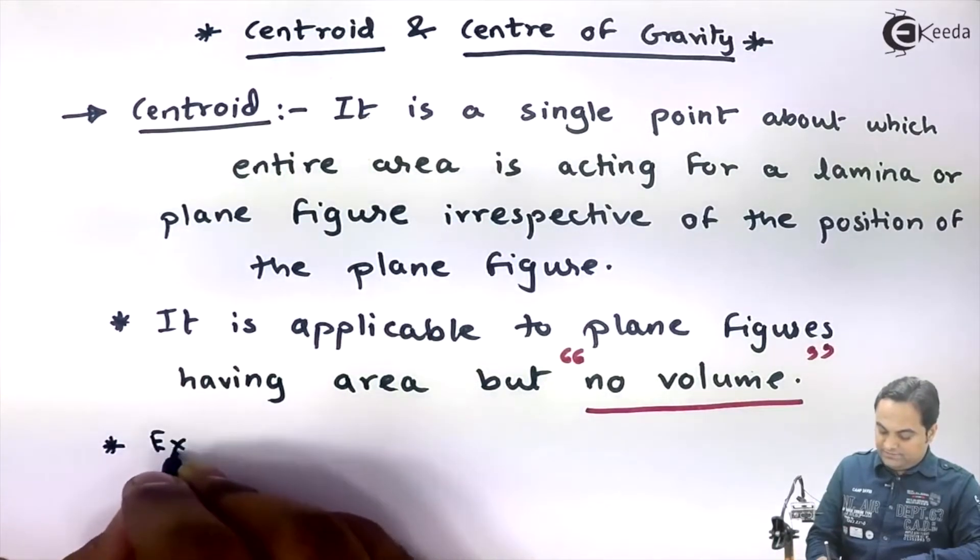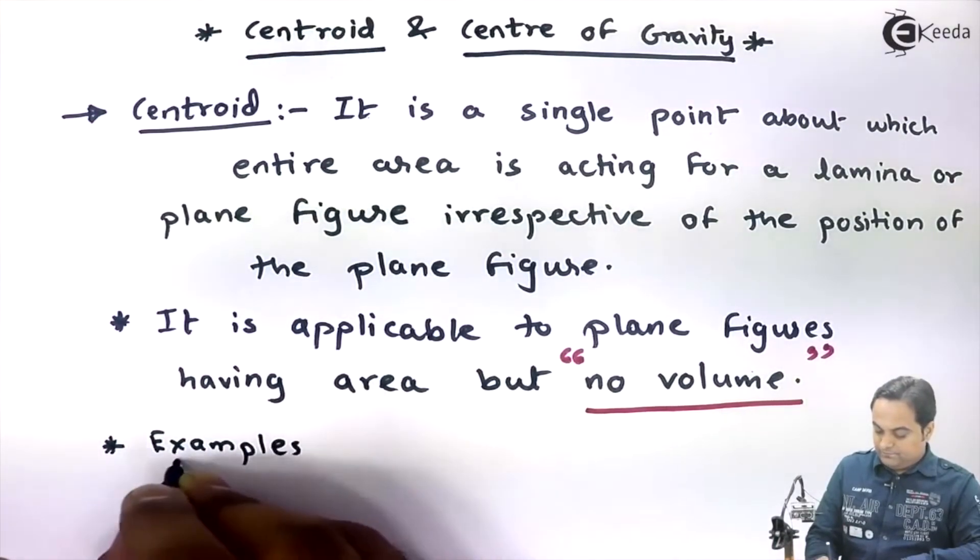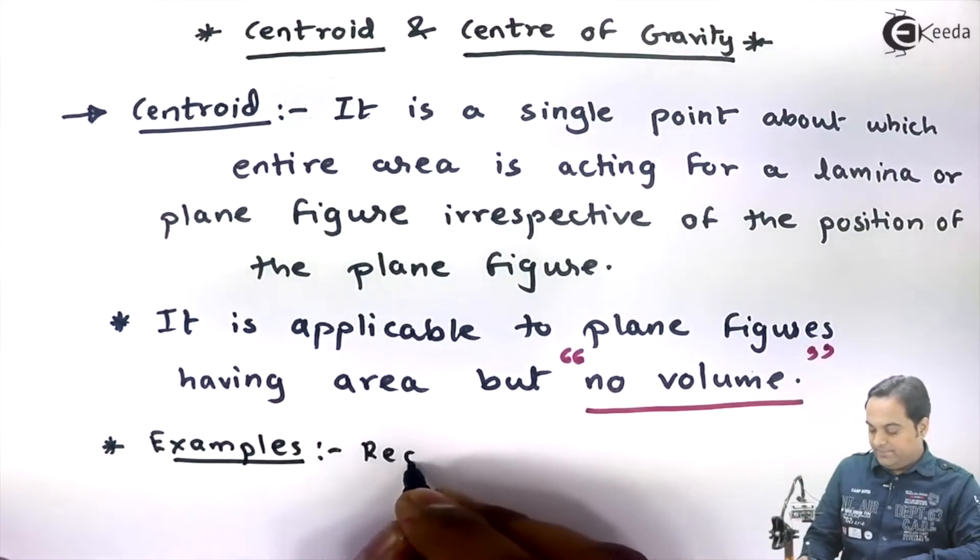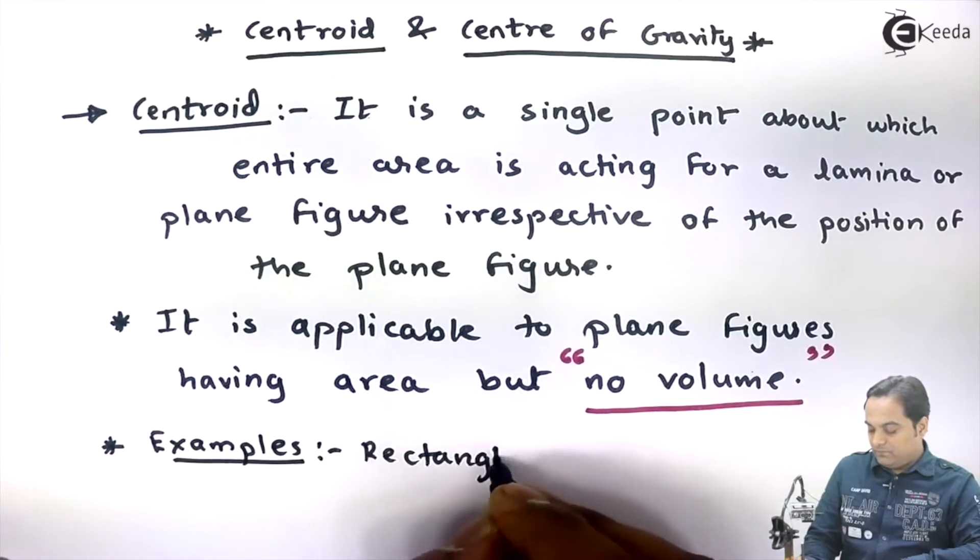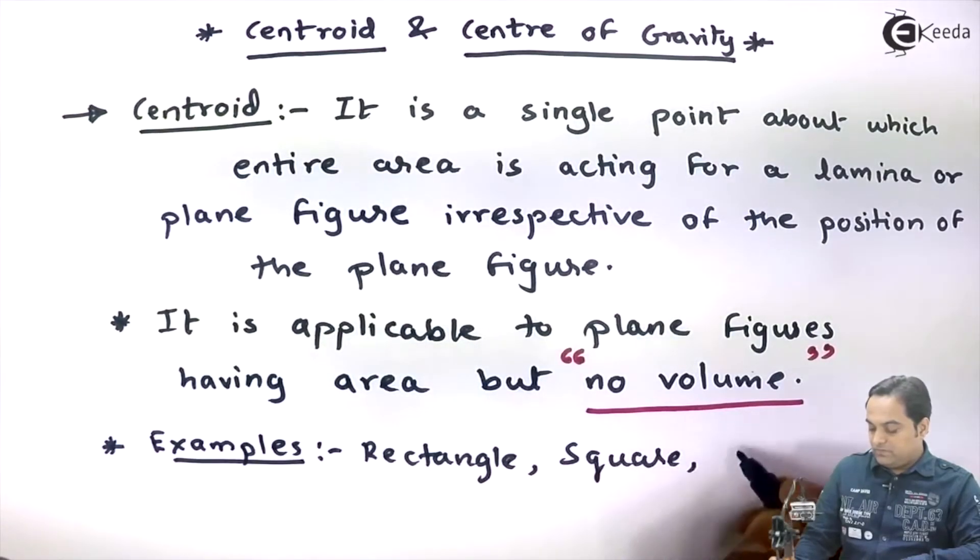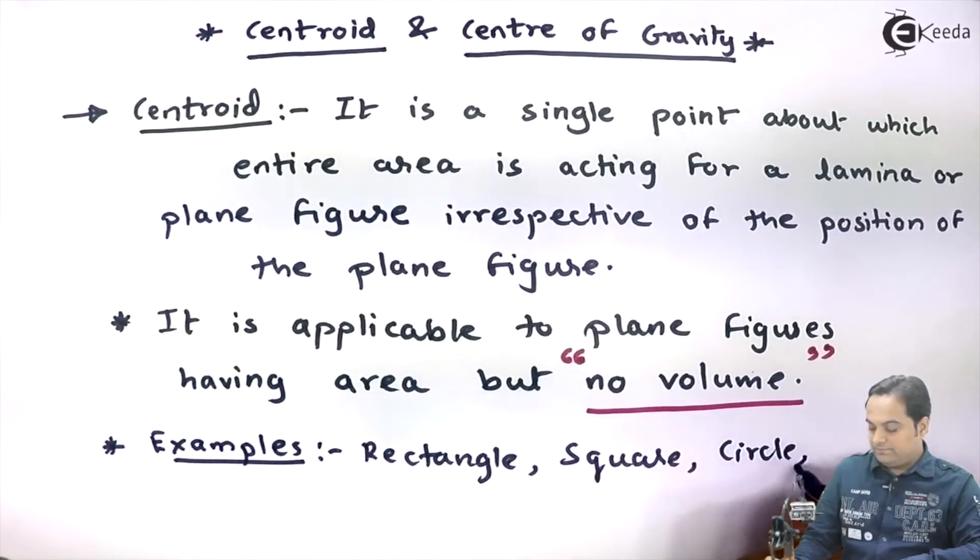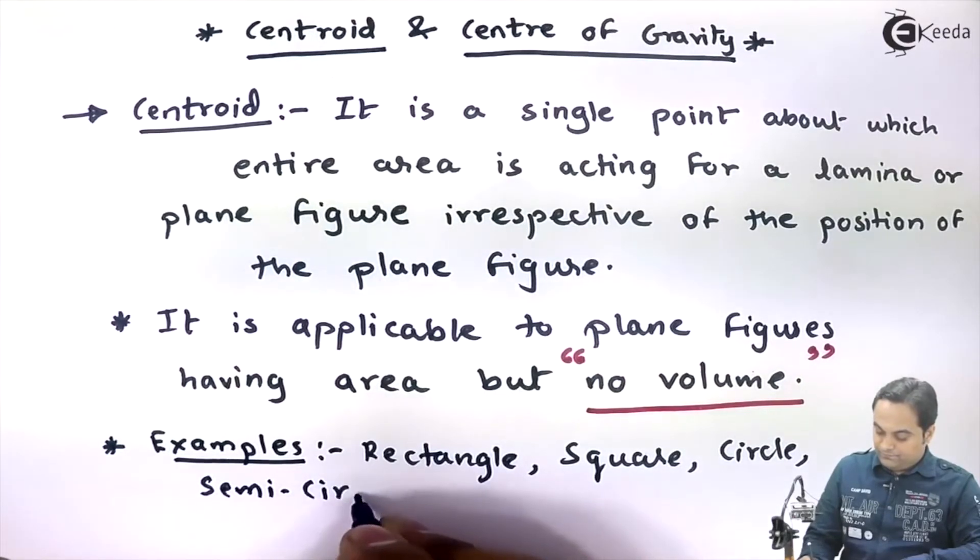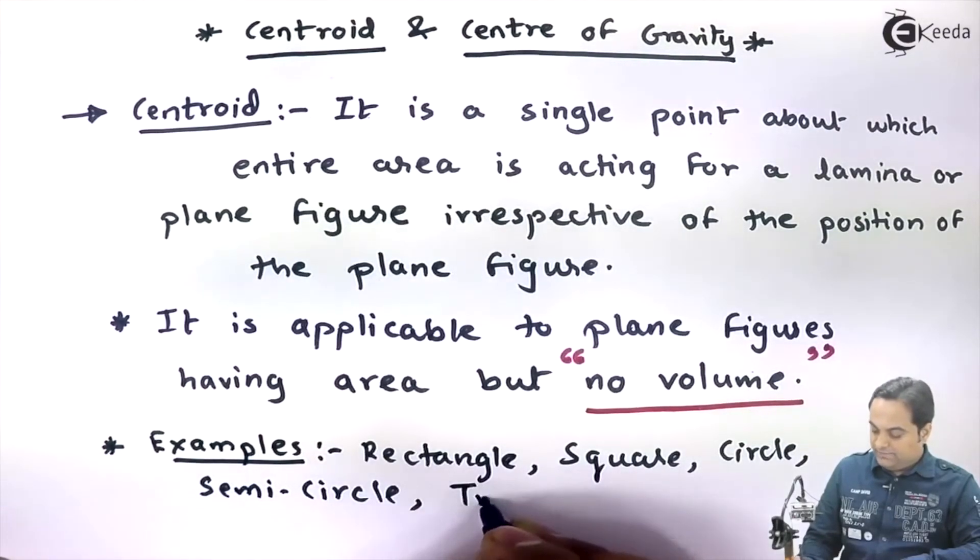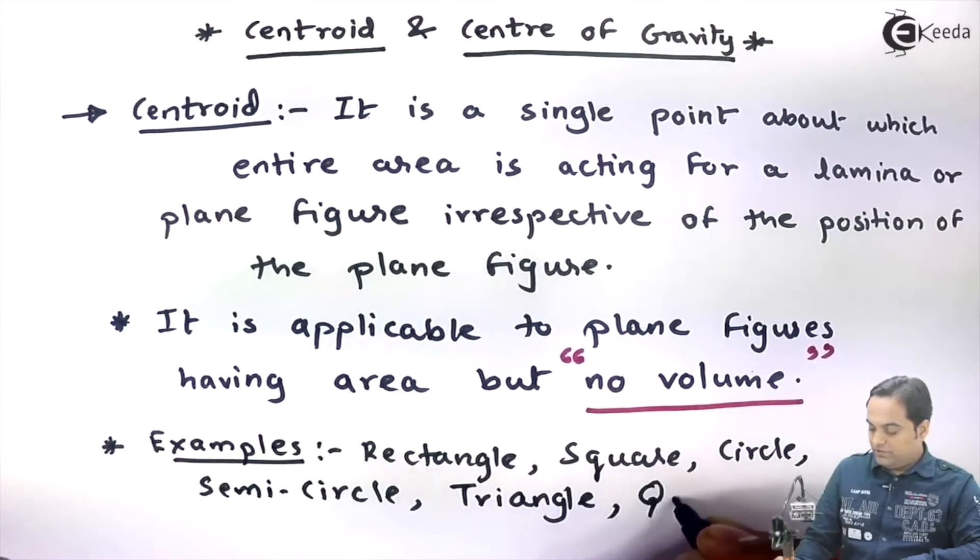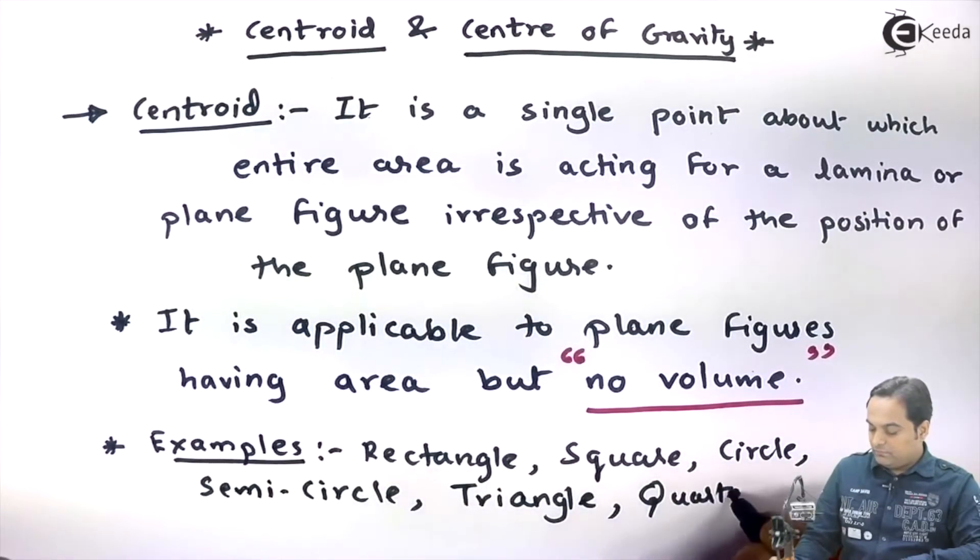Examples: some of the 2D figures are rectangle, square, circle, semicircle, triangle, quarter circle, etc.